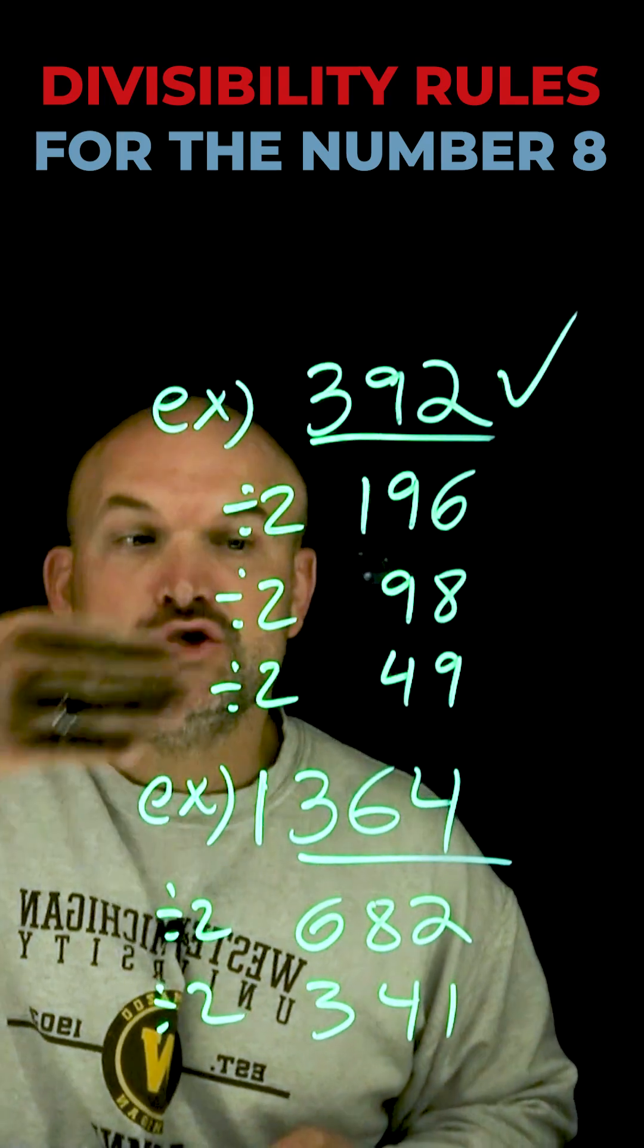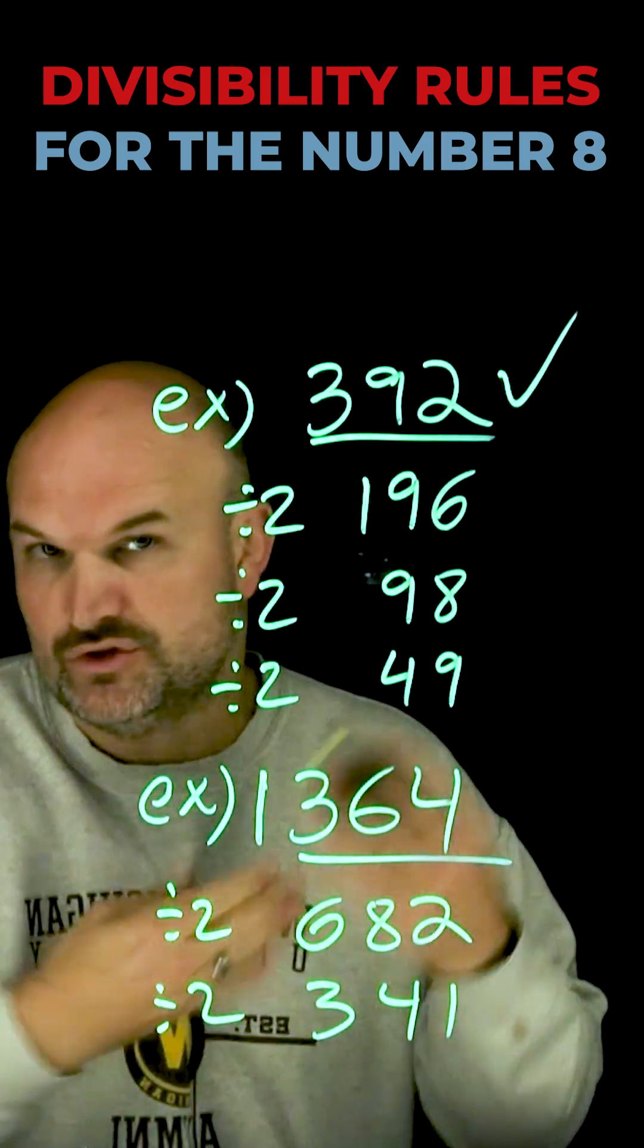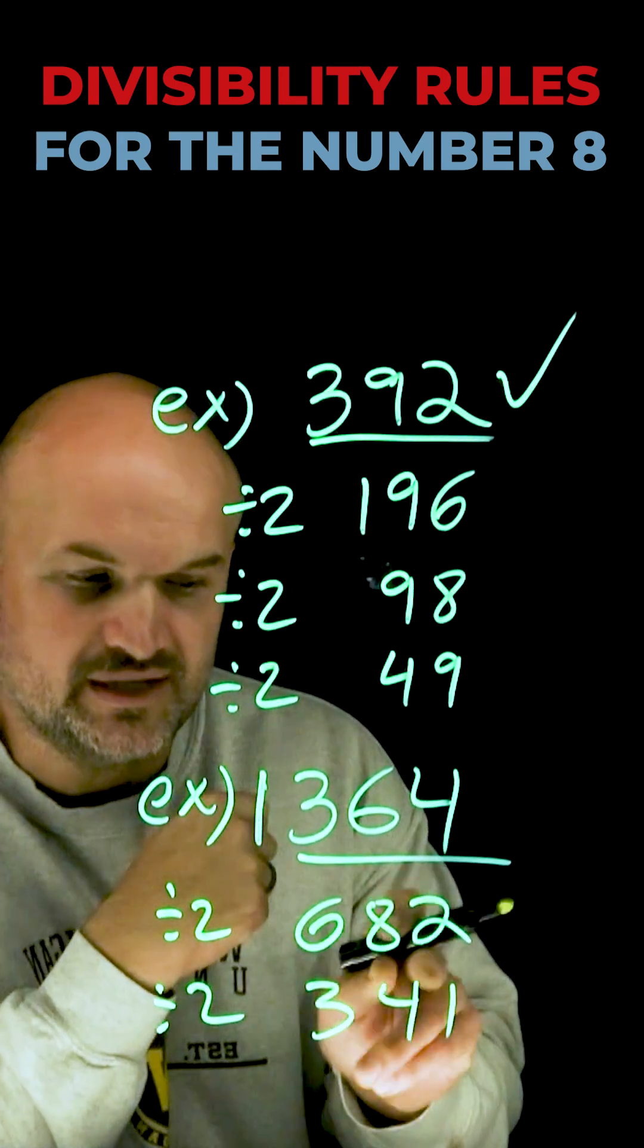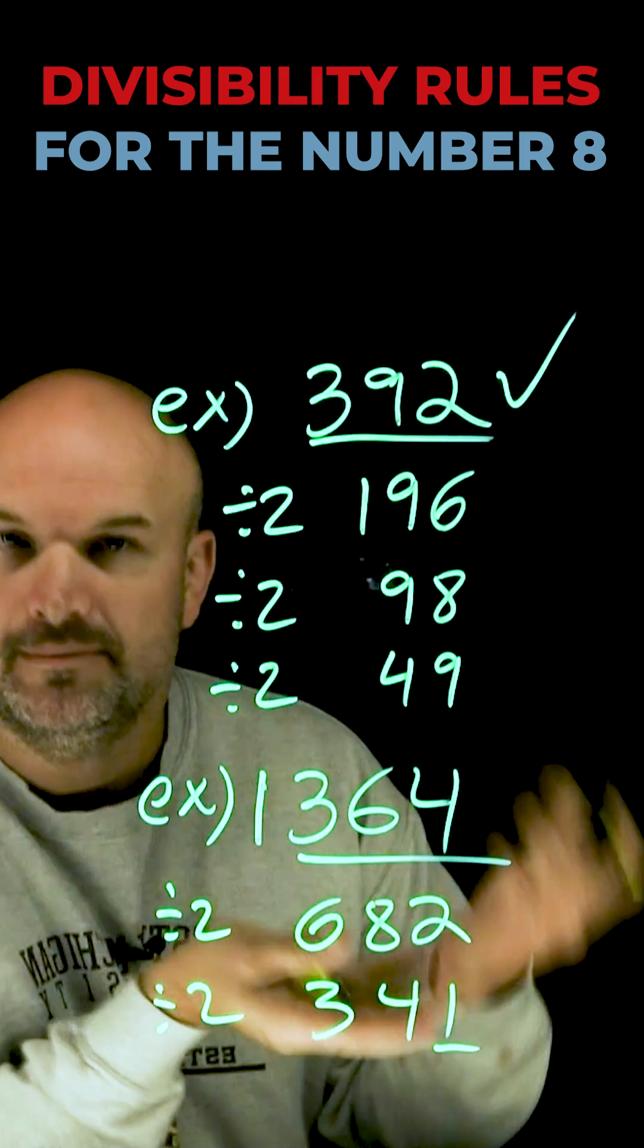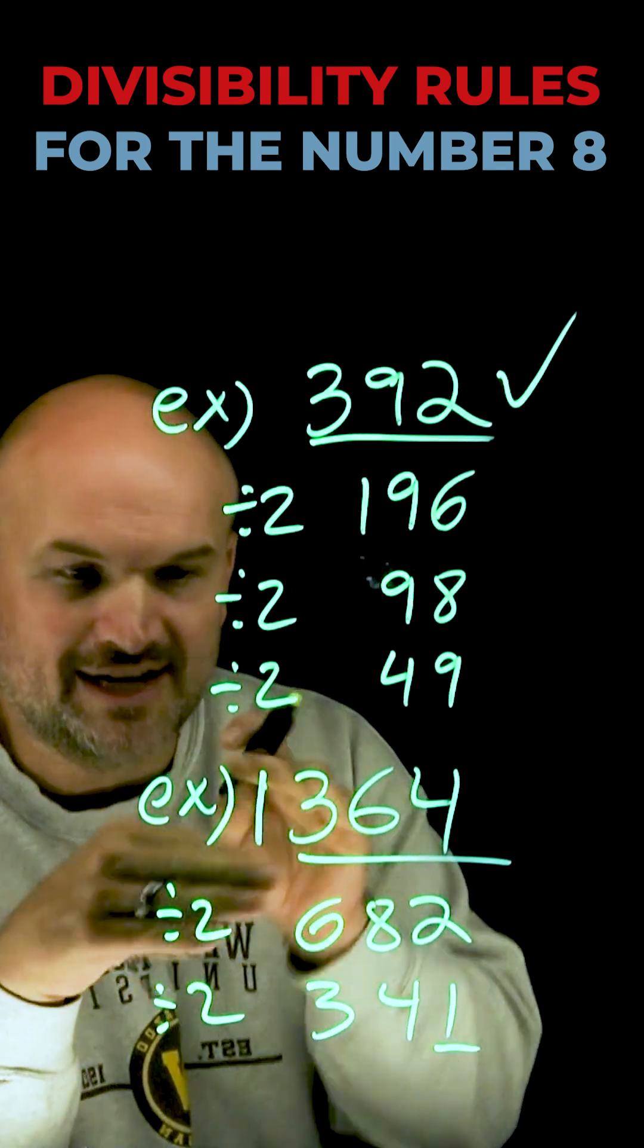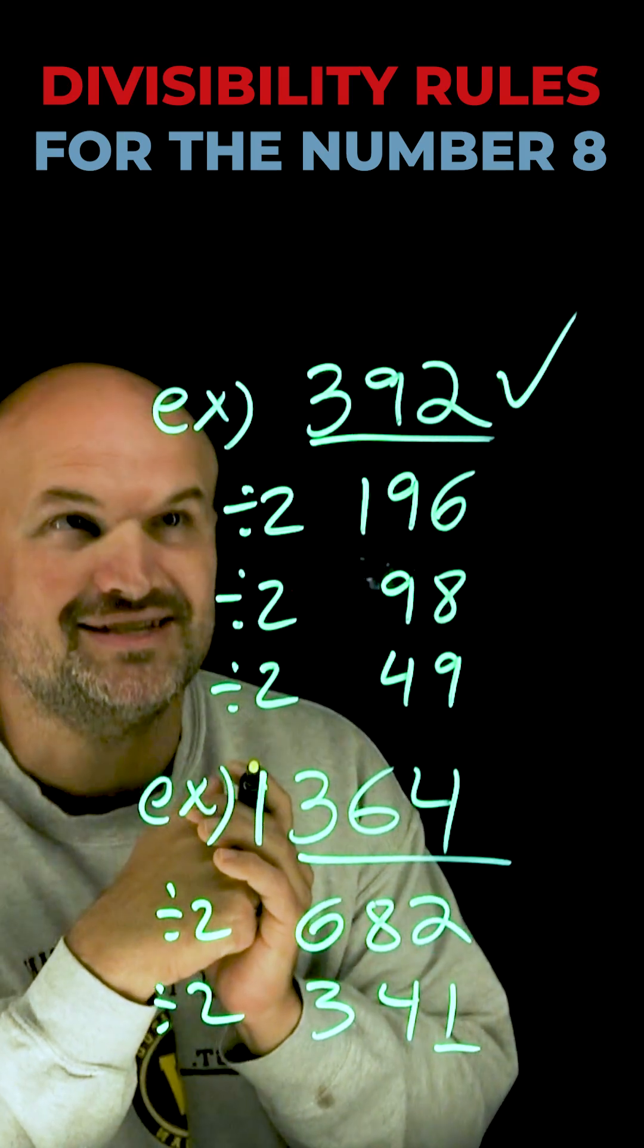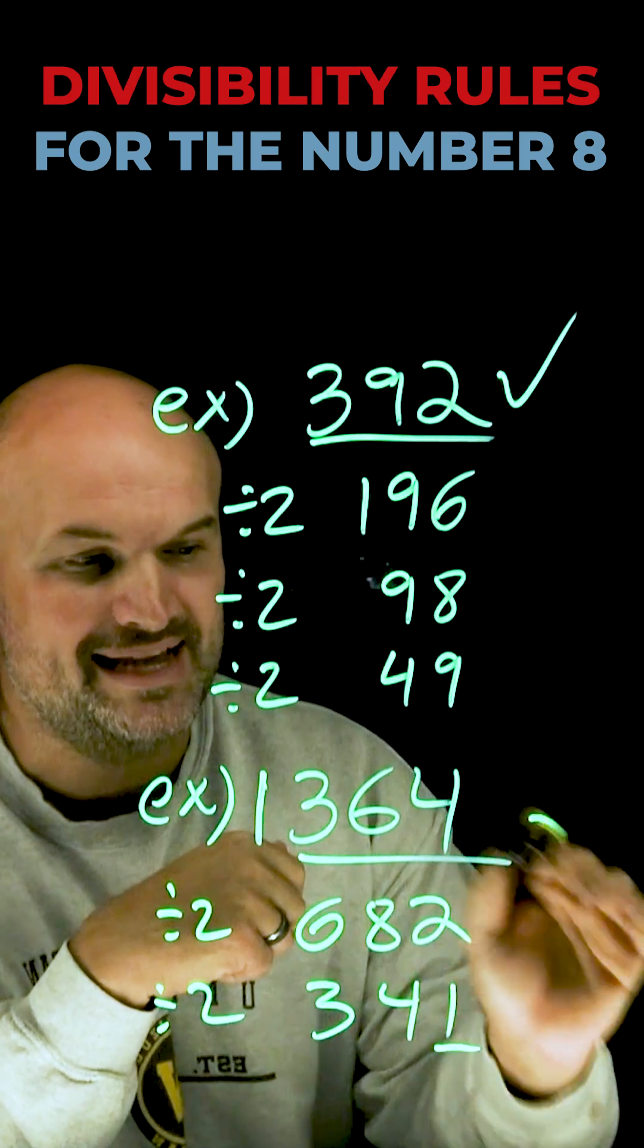Now, again, I'm looking for dividing by 2 three times, or 2 cubed, which would be 8. In this case, I cannot divide 341 by 2 because it is going to be an odd number based on the last digit. So, therefore, I can only divide this by 2 twice. So, therefore, 1,364 is not divisible by 8.